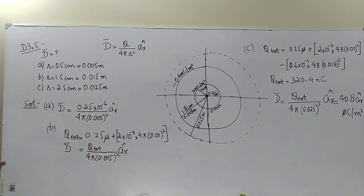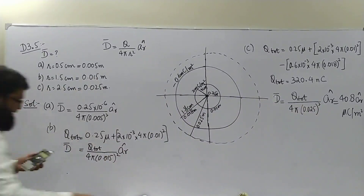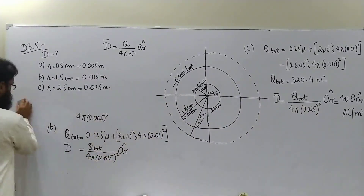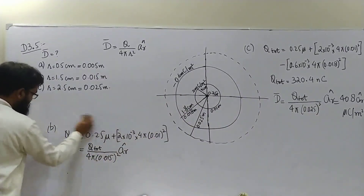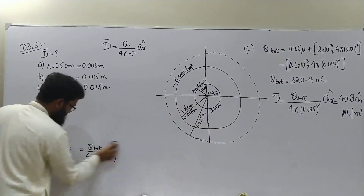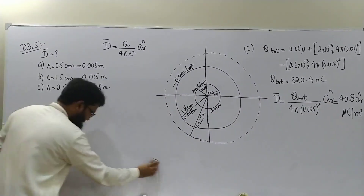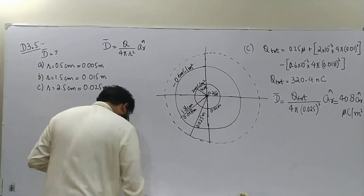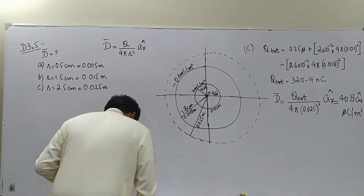For part c, the total charge enclosed by the imaginary sphere is 320.4 nanocoulombs with a positive sign. Substituting this value, the electric flux density works out to 40.8 microcoulombs per meter squared in the ar direction. Always write your units with the answer.